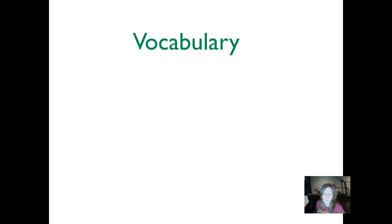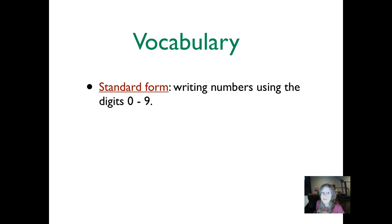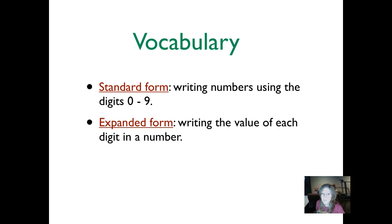We're going to have a little bit of vocabulary that you need to write in your journal, so pause as you need to. First vocabulary term is standard form. Write it as I wrote it. Writing numbers using the digits 0 to 9. You may need to pause again.